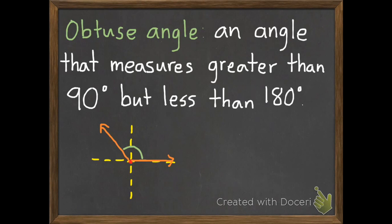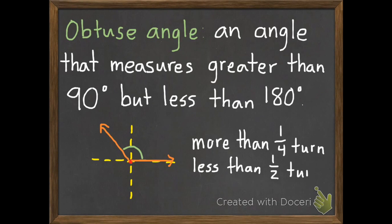So here's one example of an obtuse angle. So anything that goes past that line straight up and down but it's less than being a straight angle straight across. And using our turns from yesterday, an obtuse angle is going to be more than one-fourth of a turn but less than one-half of a turn.